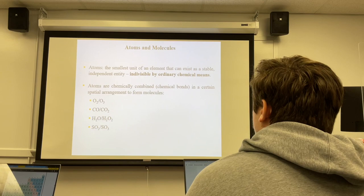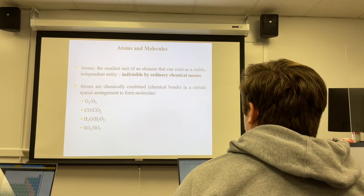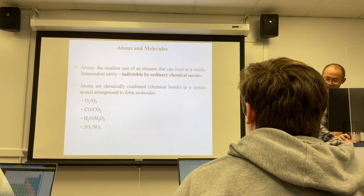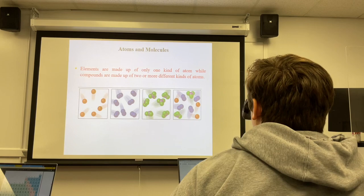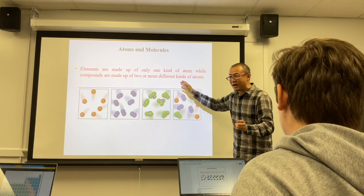And finally, sulfur and oxygen give sulfur dioxide and sulfur trioxide. The smallest building block is the atom. With that understanding, we have a better definition for element and compound.